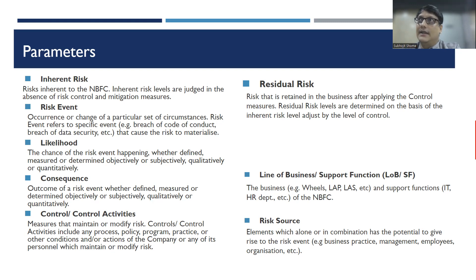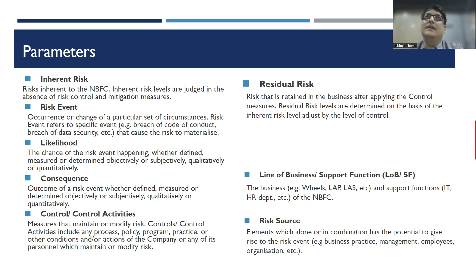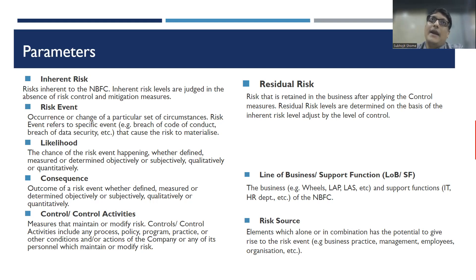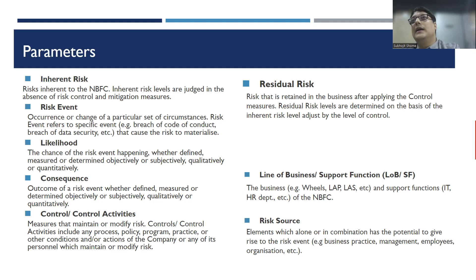After the inherent risk levels are calculated, one must look at the control activities that the NBFC has put into place. Control activities are those risk management or mitigation processes that the NBFC has put in to contain the risk event. The effectiveness of control can be assessed by looking at the design effectiveness of the control and the implementation effectiveness of such control. The PDF contains conditions and criteria on how to do this.